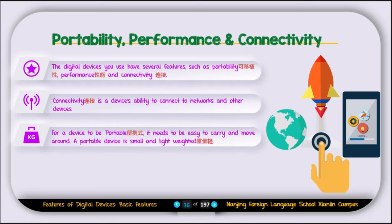For a device to be portable, it needs to be easy to carry and move around. A portable device is small and lightweight. So a portable device has a built-in battery and internet connection, and you can move it around everywhere easily. For example, your phone, your laptop, and all those devices are called portable devices.